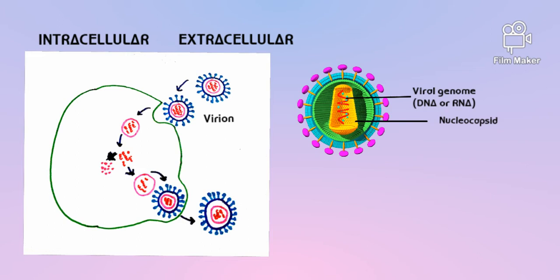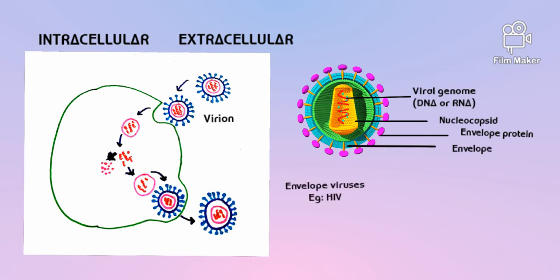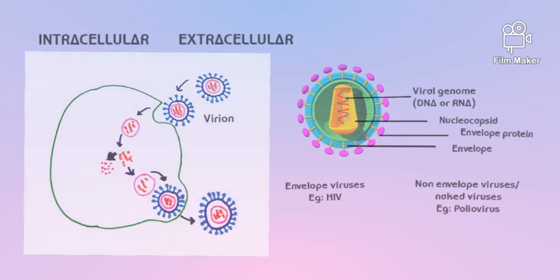Besides, there is also an envelope protein that helps in the attachment of the virus to the host cell. Viruses surrounded by an envelope are called enveloped viruses, for example HIV, while the ones without an envelope are called non-enveloped viruses or naked viruses, like poliovirus.